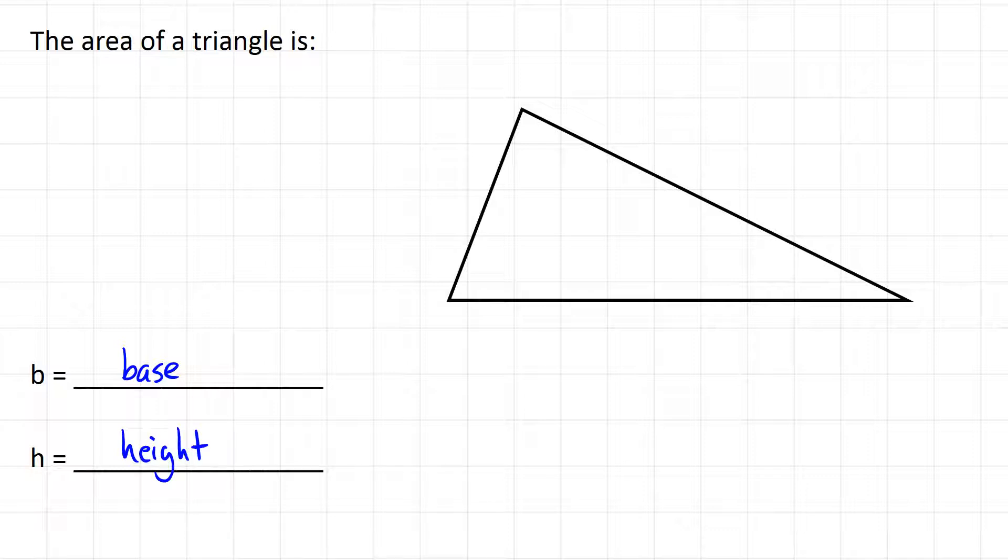The base we usually have as the bottom of the triangle, and the height is the distance going from the base up to the tip in a straight line. We usually call this a right angle, you might remember that's 90 degrees. So going straight up from the base to the tip, that's our height.